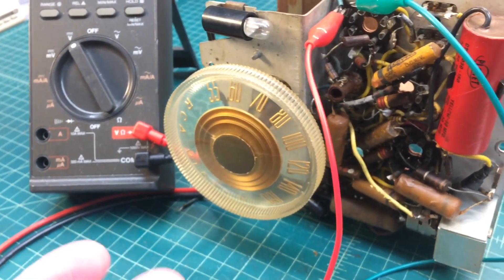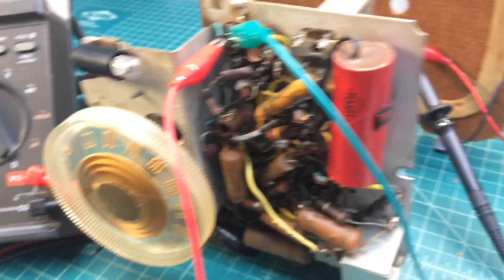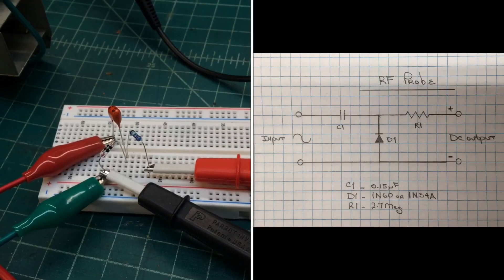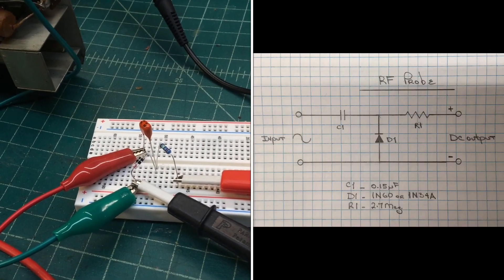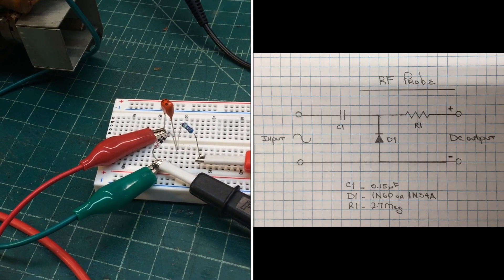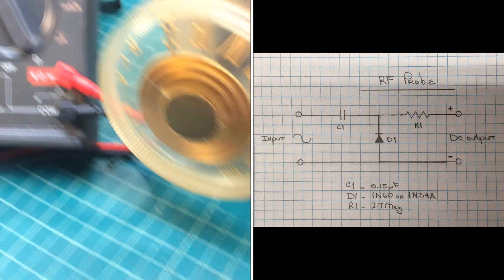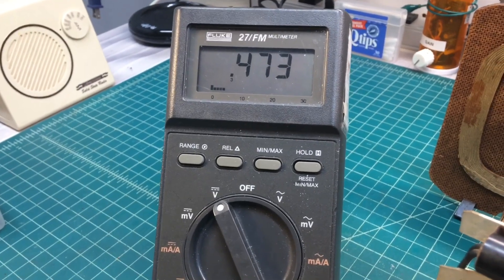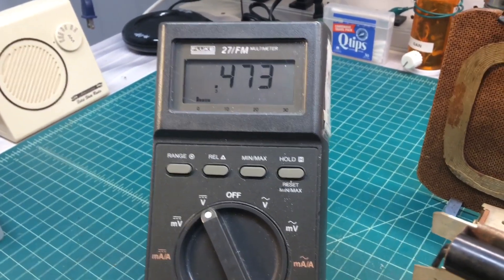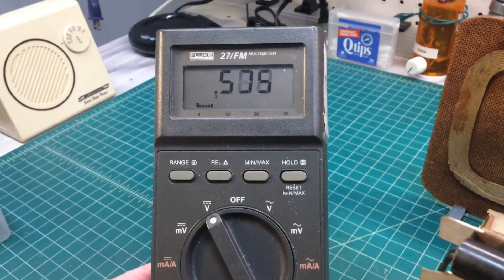You can see the radio is tuned to 600 and then you notice I've got this small circuit built here. This is nothing more than an RF probe. I'll share the schematic here. I'm just taking the RF signal and converting it back to DC. So I can just measure that directly on my meter.